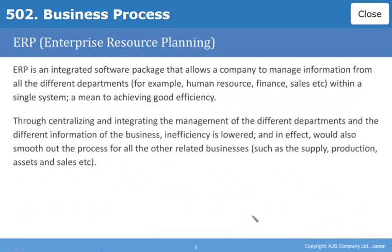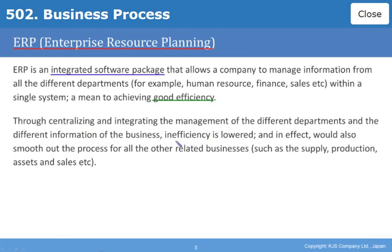Before we get on to BPM, let us first of all look at something called ERP, or Enterprise Resource Planning. Enterprise Resource Planning is an integrated software package that allows a company to manage information from all the different departments — for example, human resource, finance, sales, etc. — within a single system. A means to achieving good efficiency. Through centralising and integrating management of the different departments and the different information of the business, inefficiency is lowered.